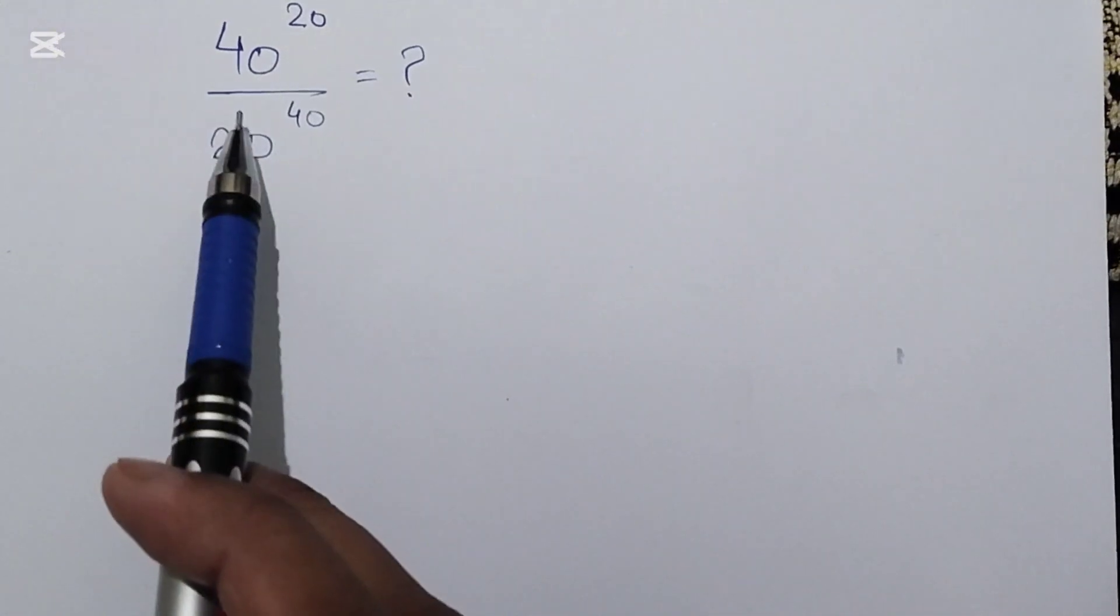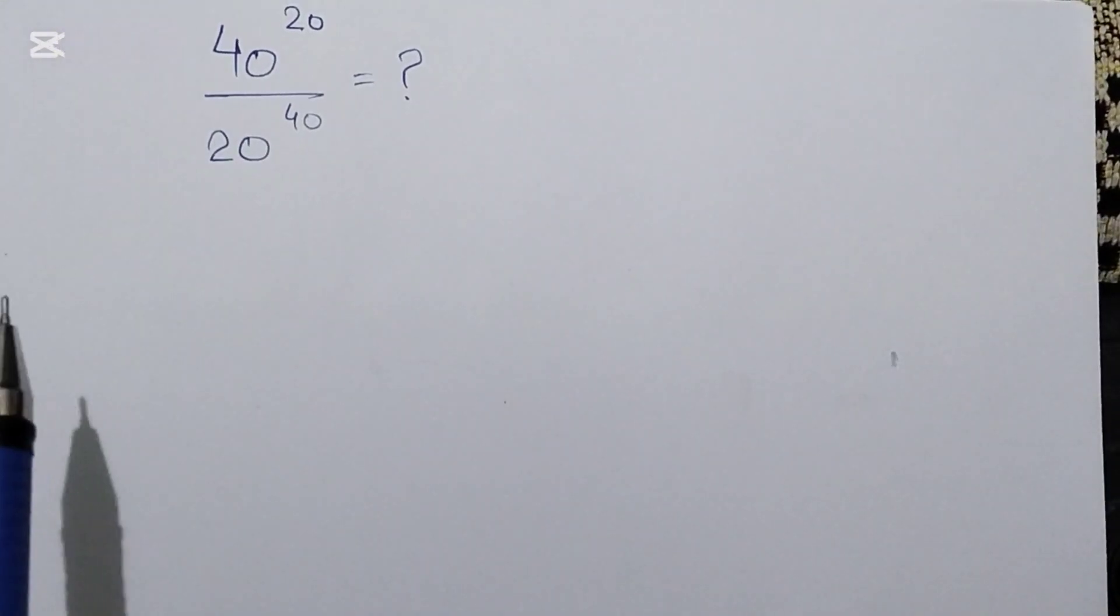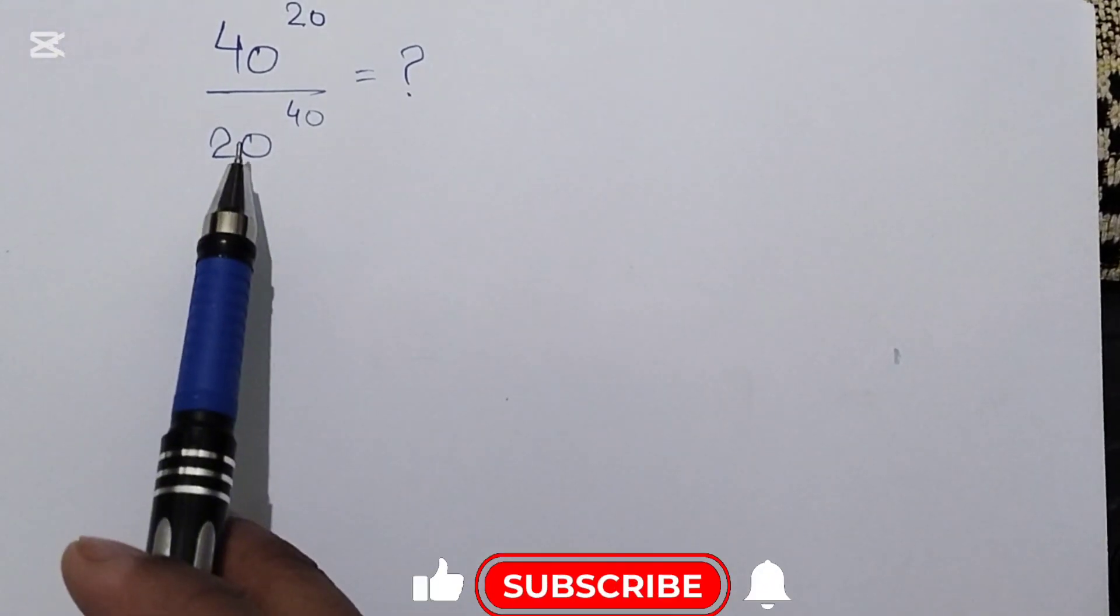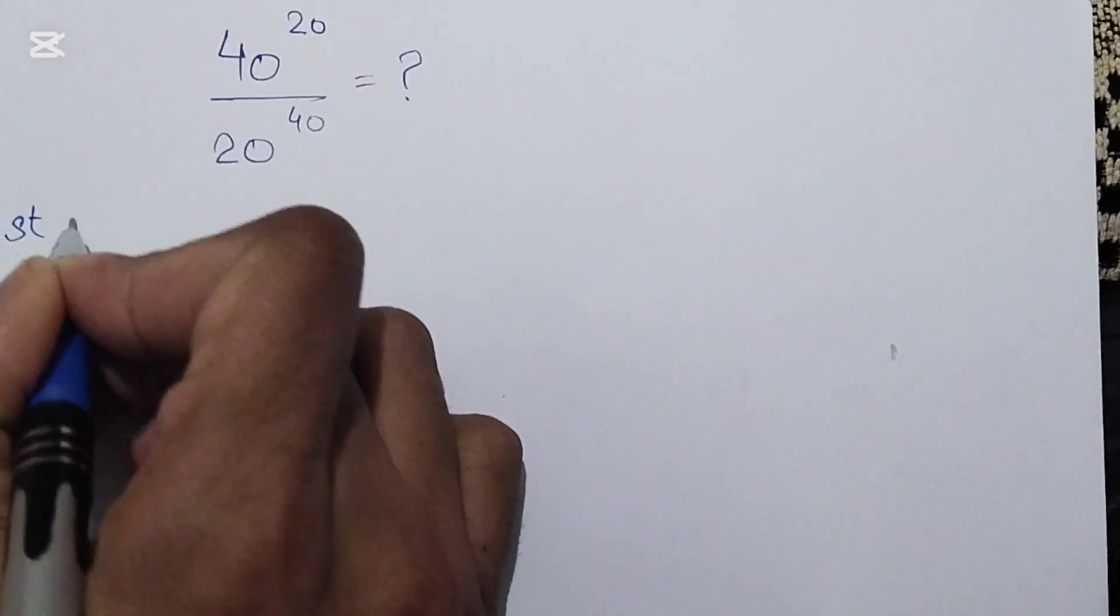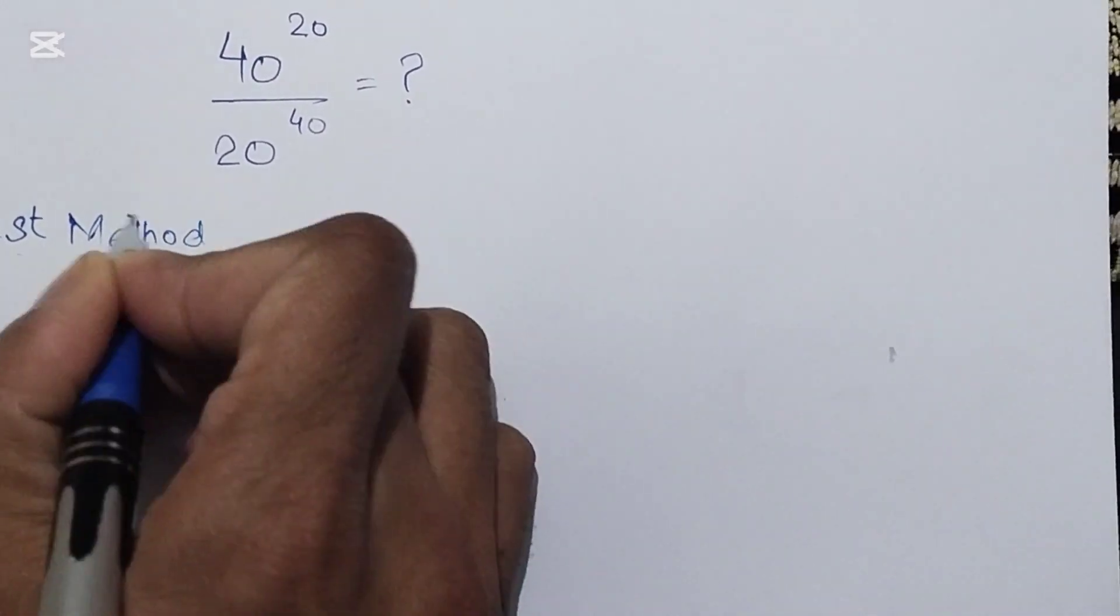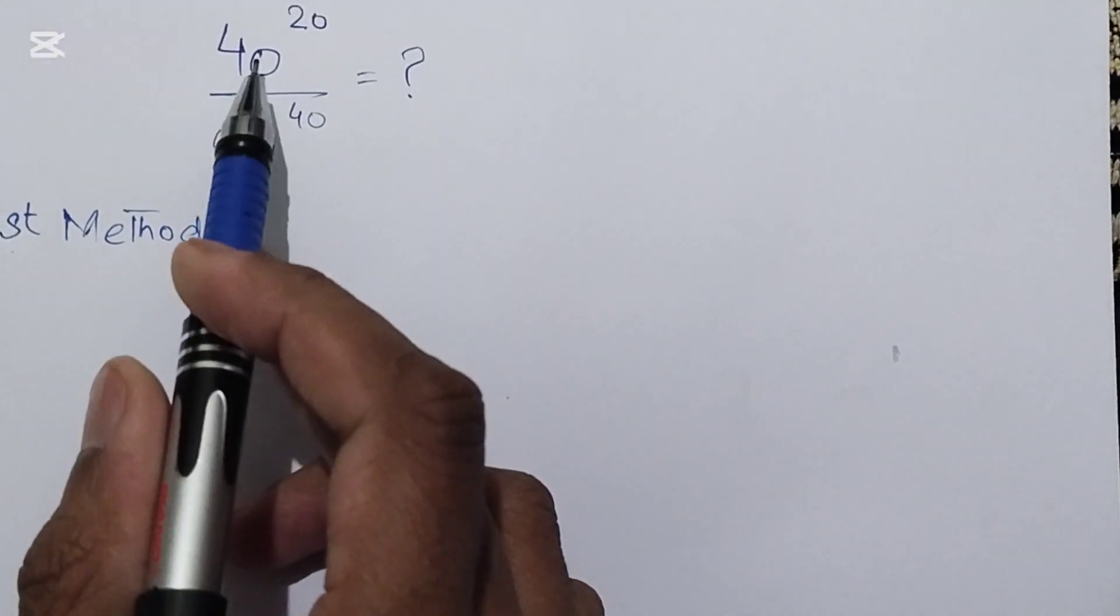Hi everyone, welcome to my new video. Today we will simplify a problem without calculator: 40 power 20 over 20 power 40. There are two methods to solve this question. First method in solving this question is as follows.